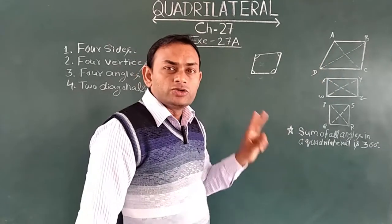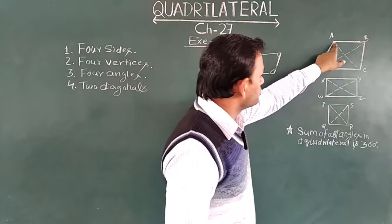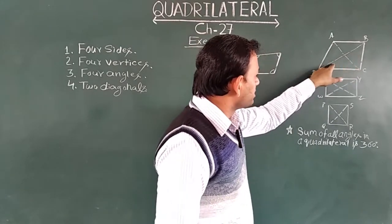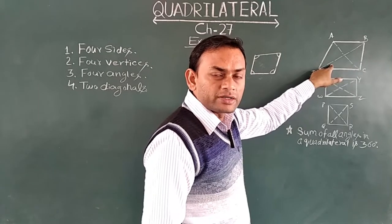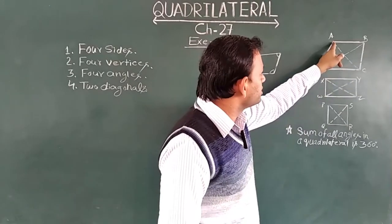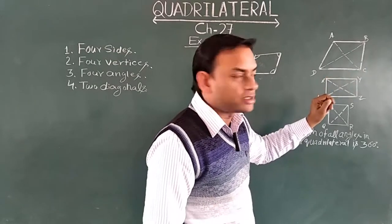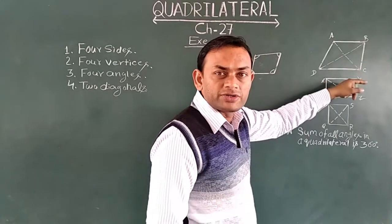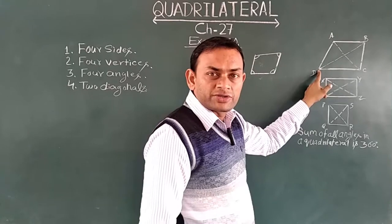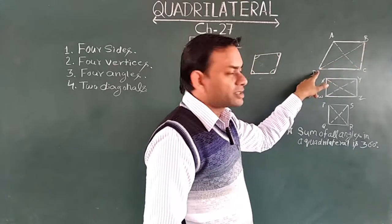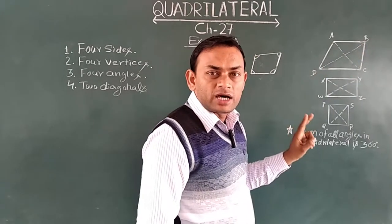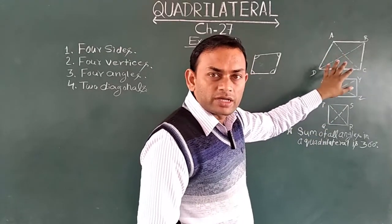In every quadrilateral, two diagonals are there. You can see here two line segments inside the quadrilateral — these lines are called diagonals. A diagonal is a line which connects the opposite vertices together. Here, A and C are two opposite vertices and this line connects both together, so AC is a diagonal. Similarly, B and D are connected by line BD, so BD is a diagonal. AC and BD are the two diagonals of this quadrilateral.